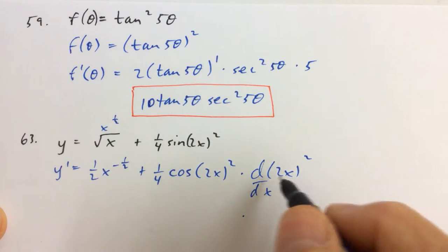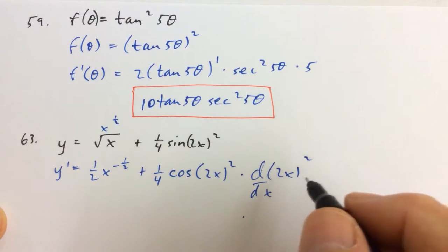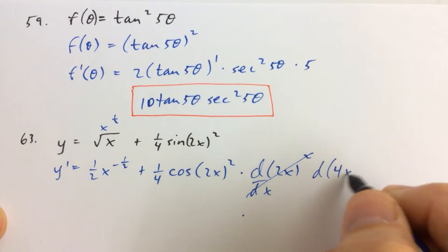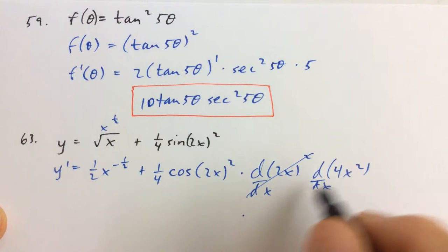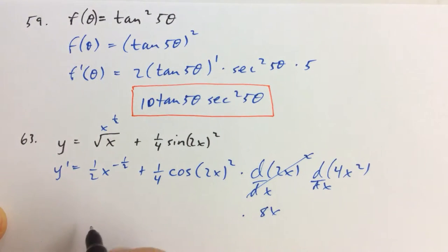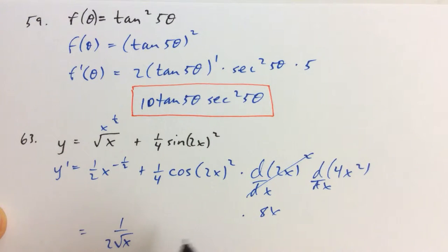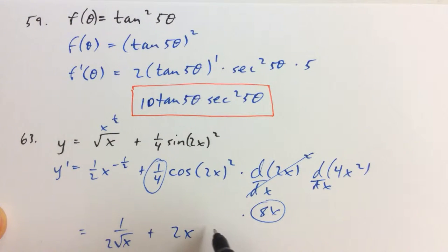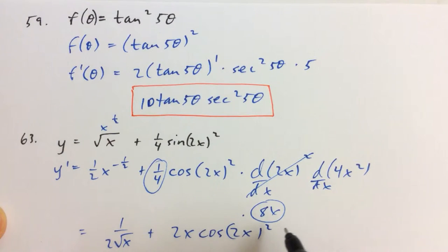The derivative of 2x squared — let's just write it as the derivative of 4x squared. And the derivative of 4x squared is 8x, so we're done with that part. Cleaning it up: that would be 1 over 2 times the square root of x, plus 1/4 there, and 8x there, so 8x over 4 is 2x, and then we have cosine of (2x) quantity squared.